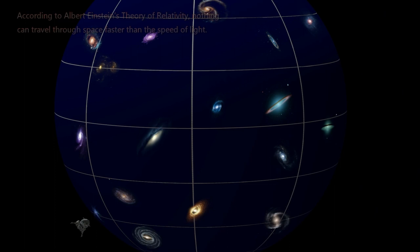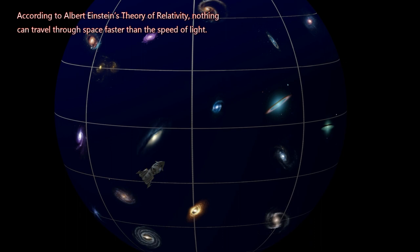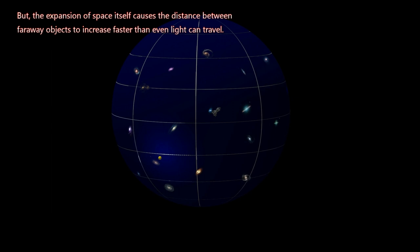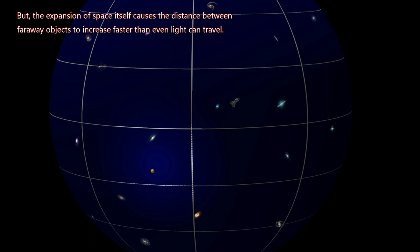According to Albert Einstein's theory of relativity, nothing can travel through space faster than the speed of light. But the expansion of space itself causes the distance between far away objects to increase faster than even light can travel.